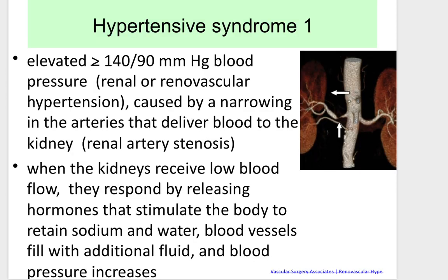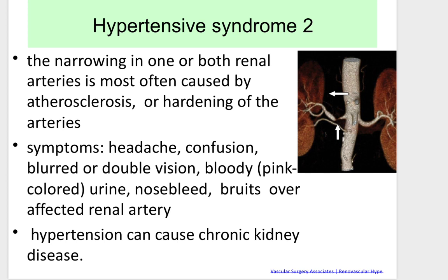The next syndrome is hypertensive syndrome. It is typically characterized by elevated blood pressure more than 180/90 mmHg. We name it renal or renovascular hypertension, caused by narrowing of the arteries that deliver blood to the kidney — renal artery stenosis. When kidneys receive low blood flow, they release hormones that stimulate the body to retain sodium and water, filling blood vessels and increasing blood pressure. Narrowing of the renal arteries is most often caused by atherosclerosis. Symptoms include headache, confusion, blurred or double vision, bloody or pink-colored urine, nosebleed, bruits over the affected renal artery, and hypertension that can cause chronic kidney disease.